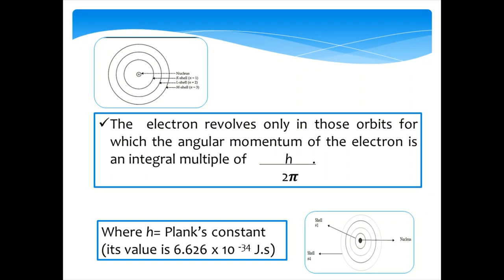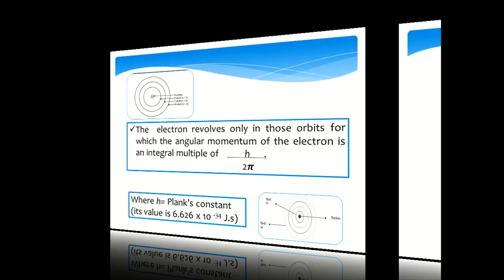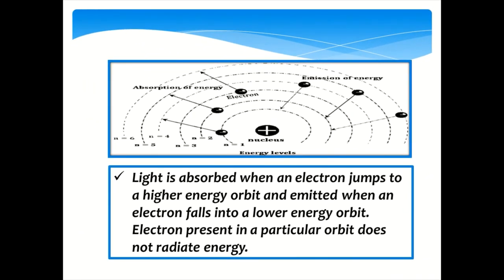Light is absorbed when an electron jumps to a higher energy orbit and emitted when an electron falls into a lower energy orbit. An electron present in a particular orbit does not radiate energy.